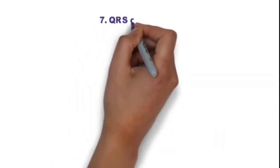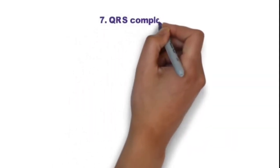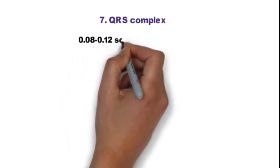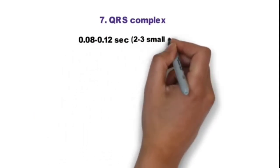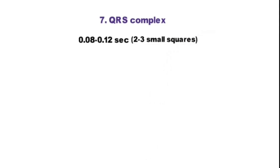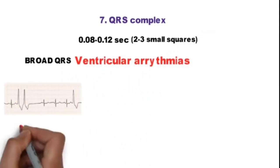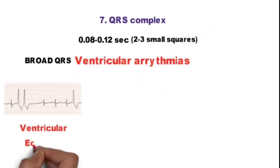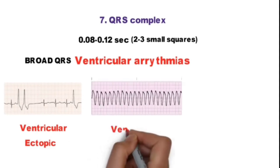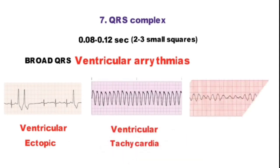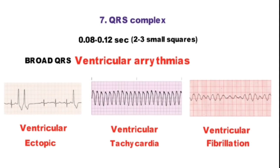Step 7 is QRS complex. Normally it is 0.08 to 0.12 second or 2 to 3 small squares. It is broad in ventricular arrhythmias, which can be ventricular ectopic, ventricular tachycardia, ventricular fibrillation, or any pathology below bundle of His.